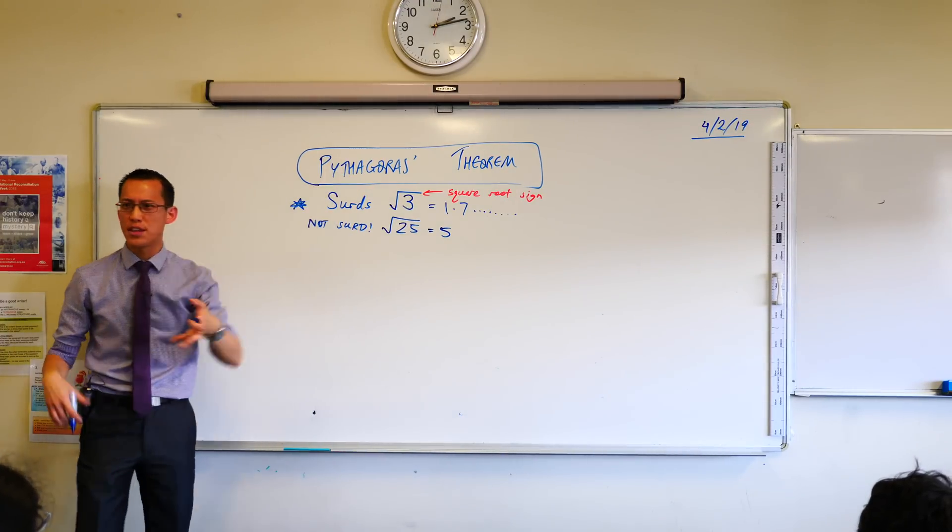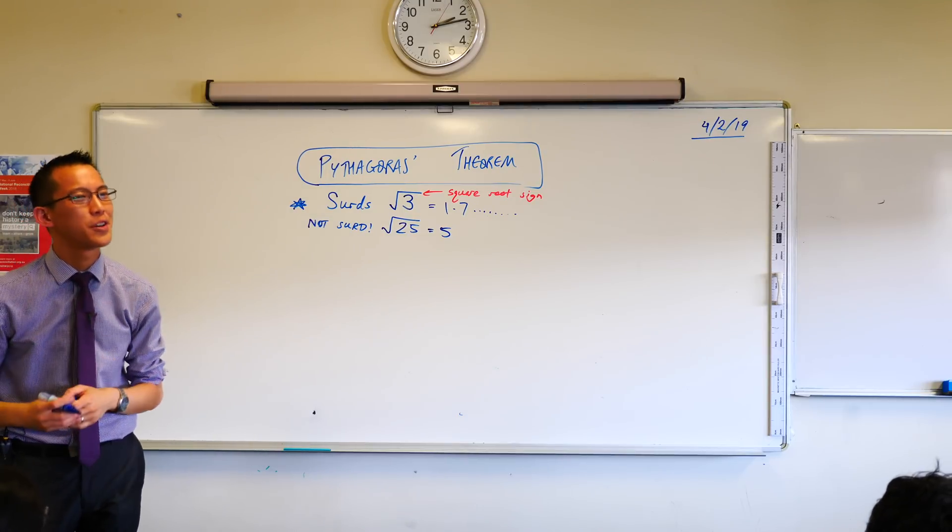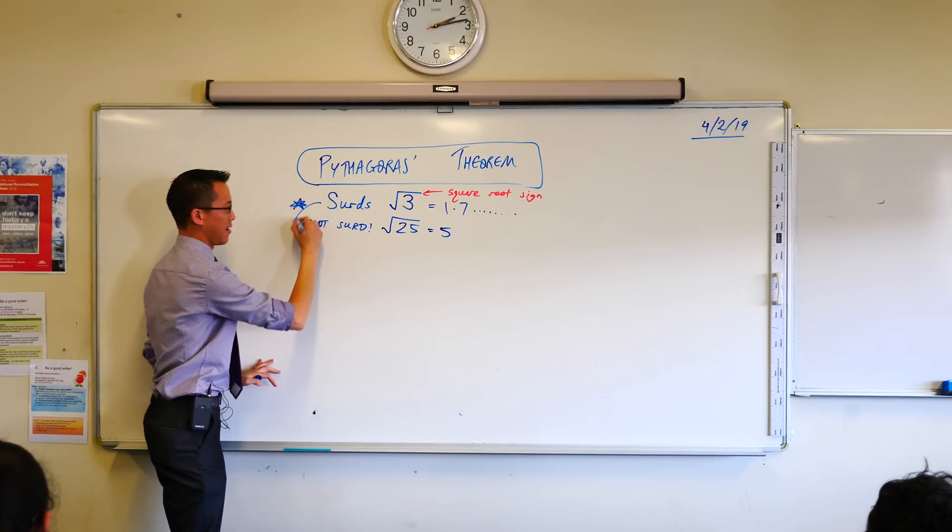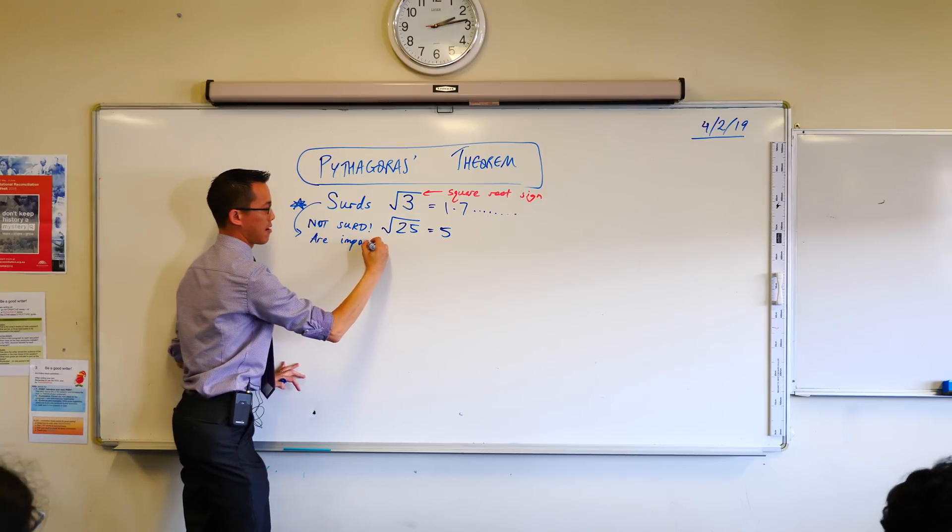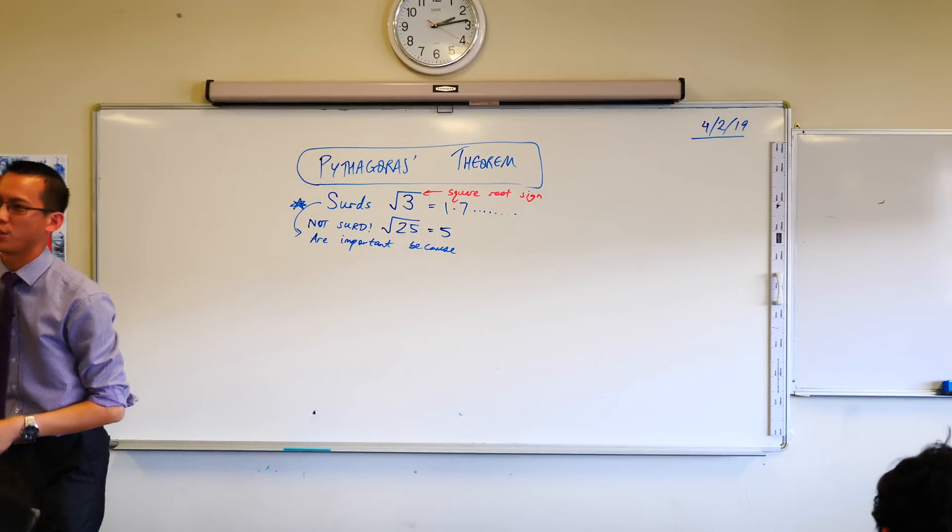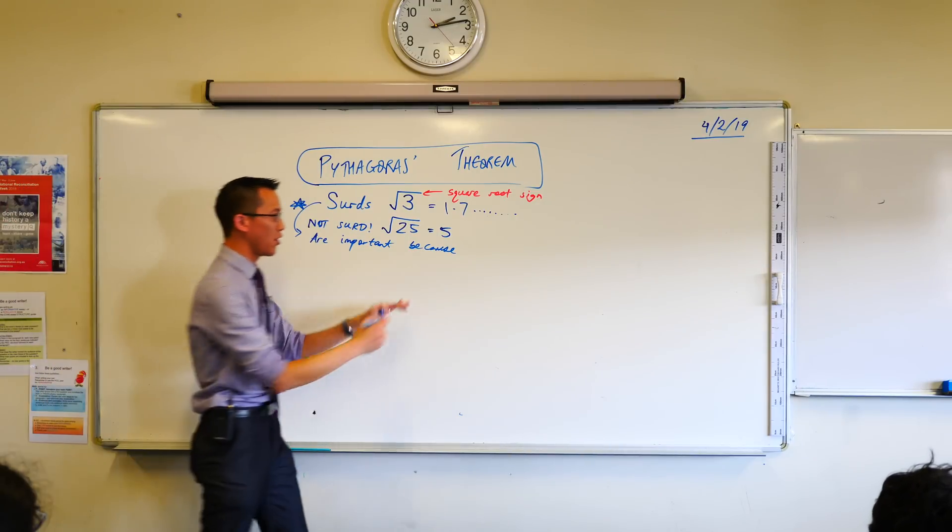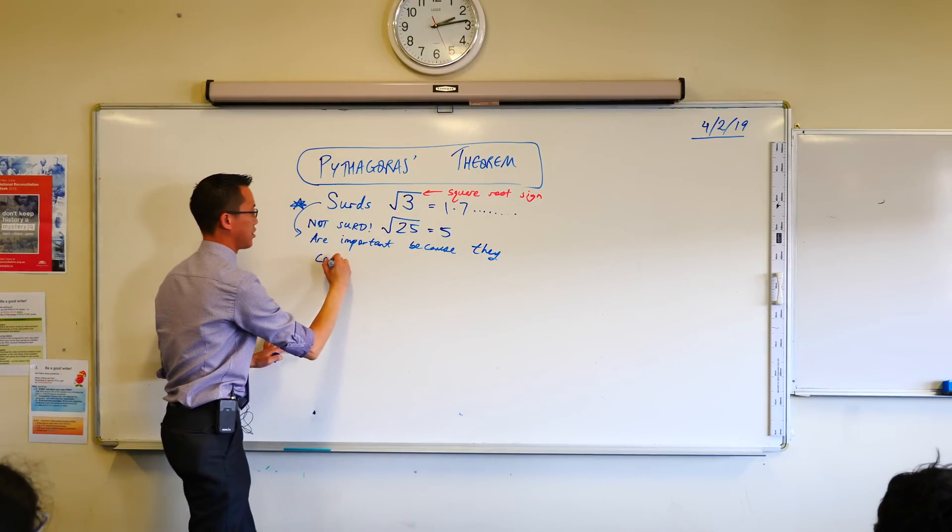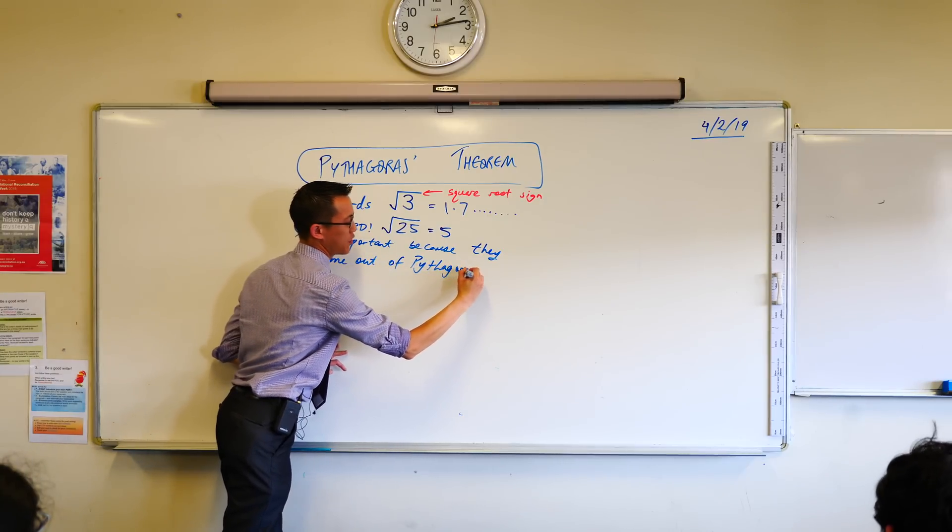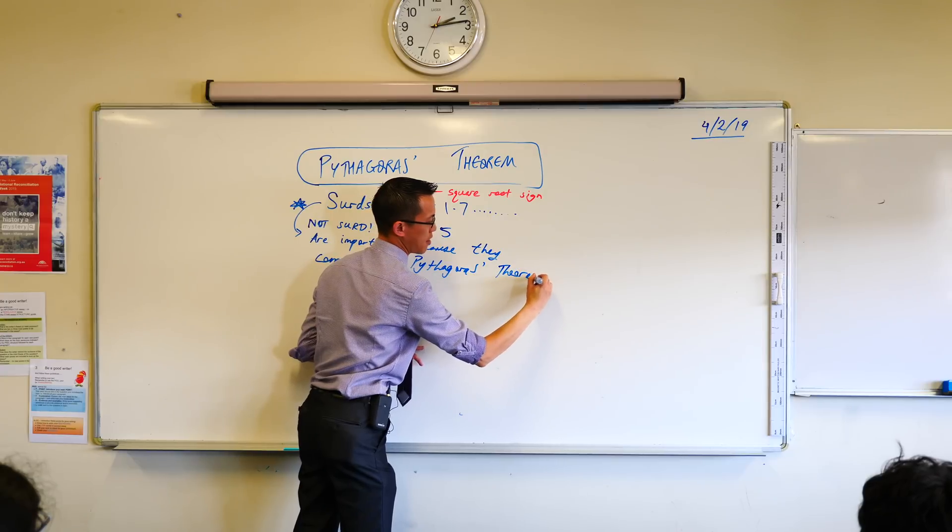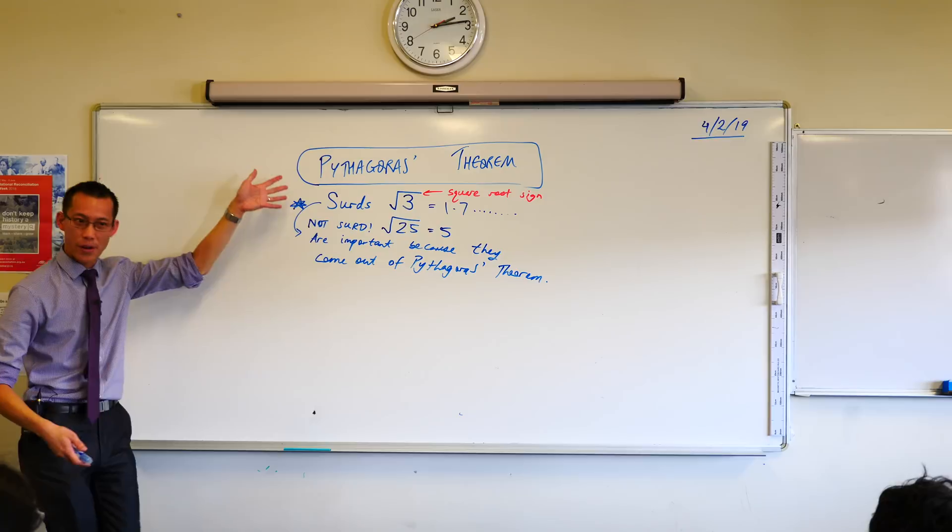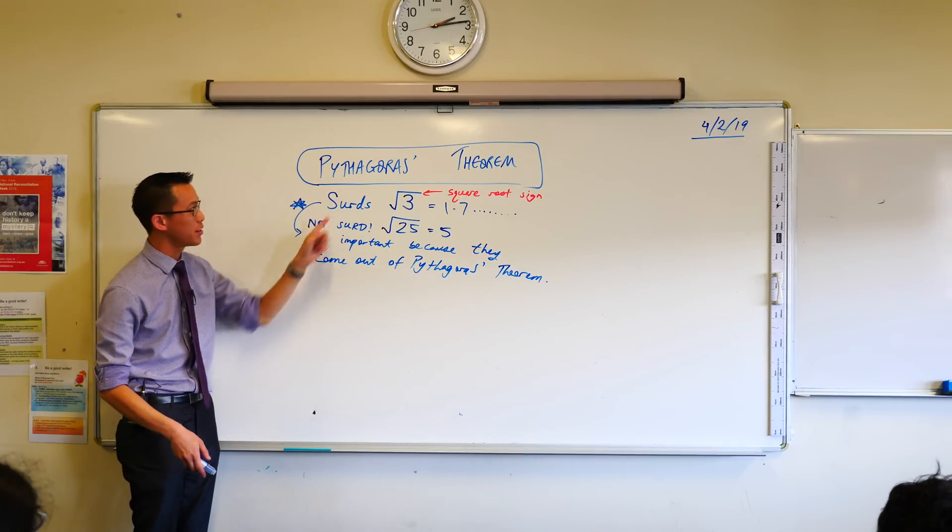It's because of this theorem, this idea, this pattern that we observe in shapes, that kind of leads us to these guys. Surds are important because they come out of Pythagoras' theorem. Now, they're actually important for lots of other reasons too, but this is the reason we start with them, and it's the reason you met them just last week before we had this lesson. So, this is where we came from. This is why we went there because we're going to go and have a look at this.